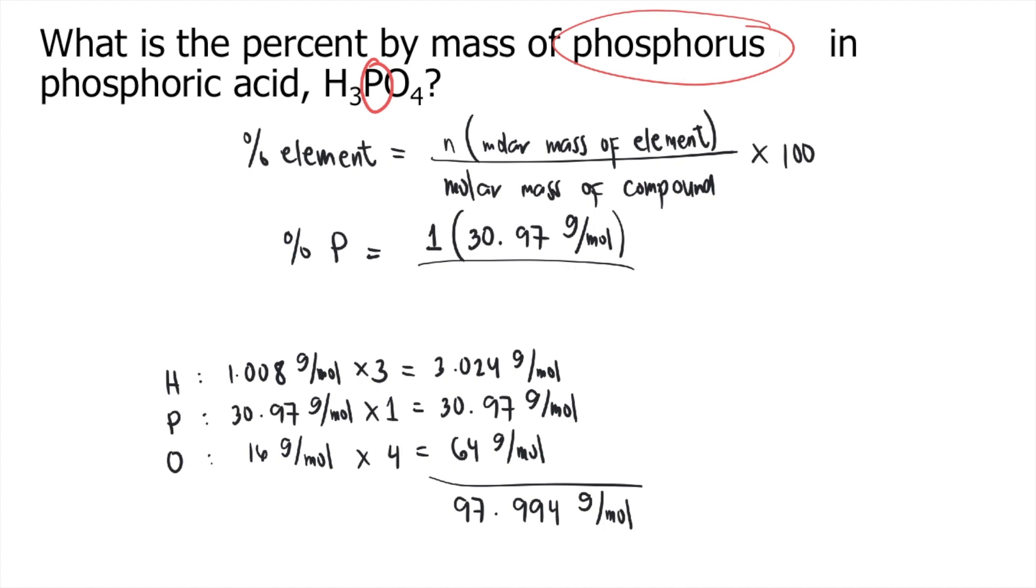So this is the molar mass of phosphoric acid. That's equal to 97.994. Since we already have the molar mass of the compound, we can now plug that into the formula. Divided by 97.994 grams per mole, times 100.